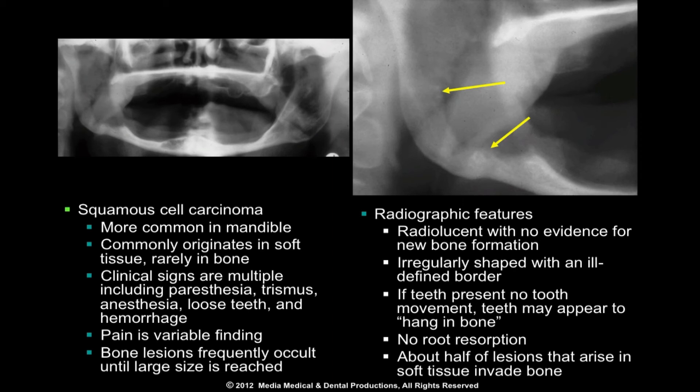Squamous cell carcinoma presents as an irregularly shaped and ill-defined radiolucency with no evidence of bone production. There is rapid destruction of both medullary and cortical bone without periosteal reaction. Root resorption and tooth movement is unusual. About half of all malignancies that arise in soft tissue invade bone.